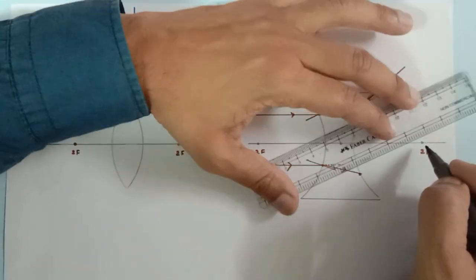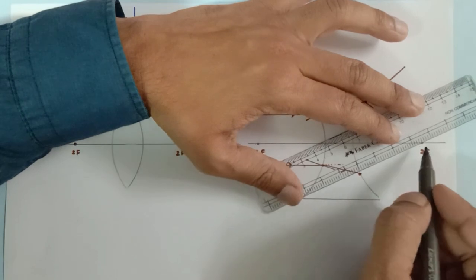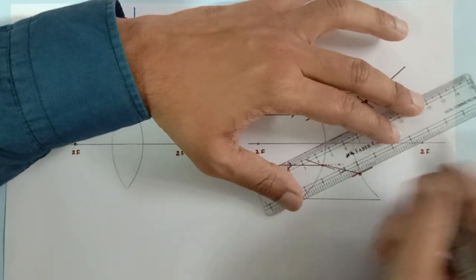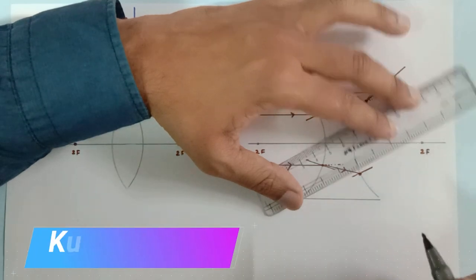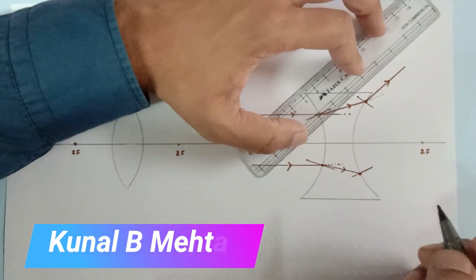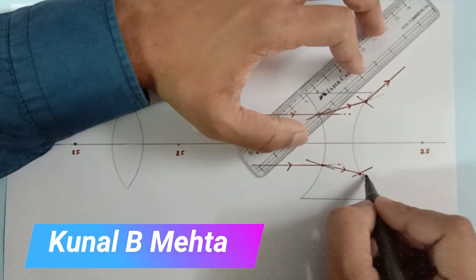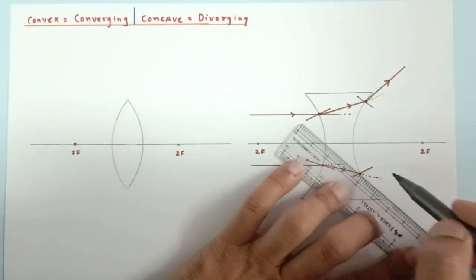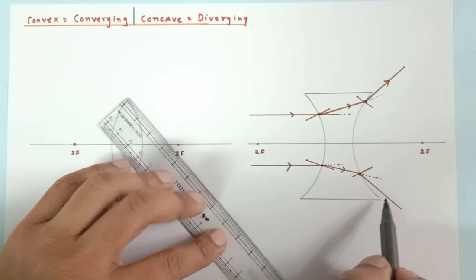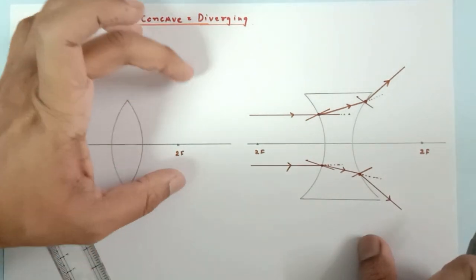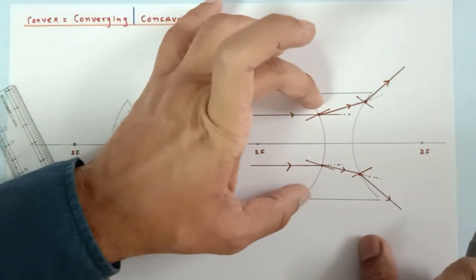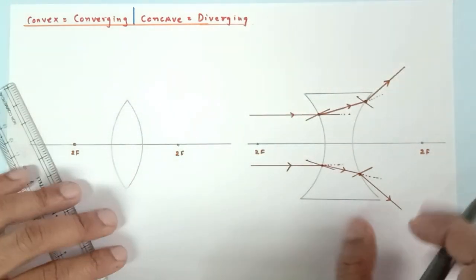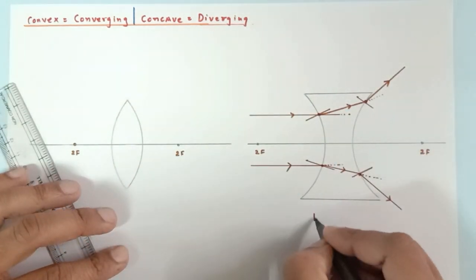The ray is bending towards the normal. Now again, this is the point of incidence for the second surface. The normal always passes through 2f. Instead of going straight, it will bend away from the normal. So that means parallel rays after passing through the concave lens are diverging, and that's why we call this lens a diverging lens.